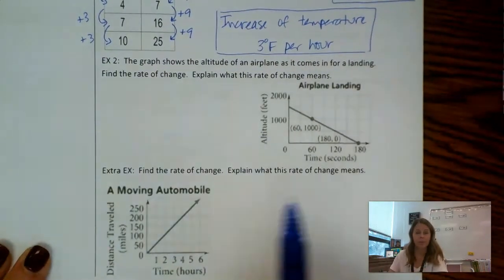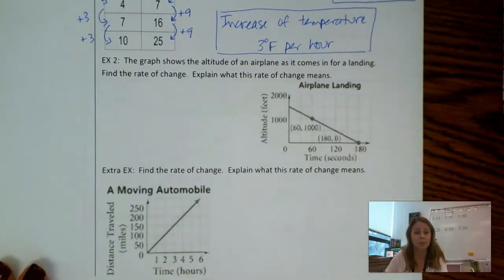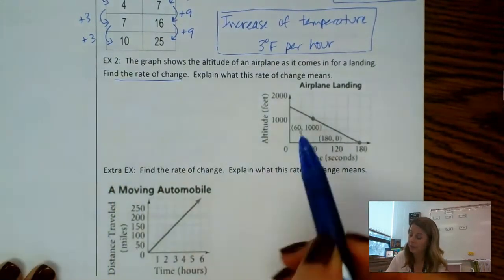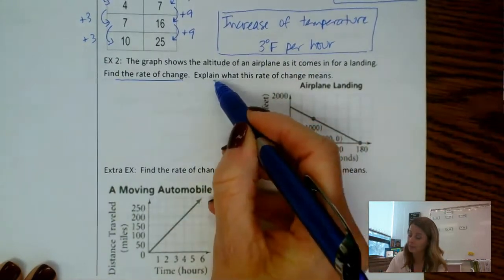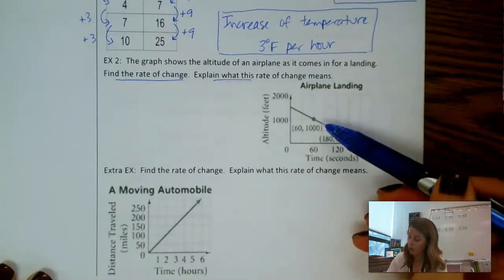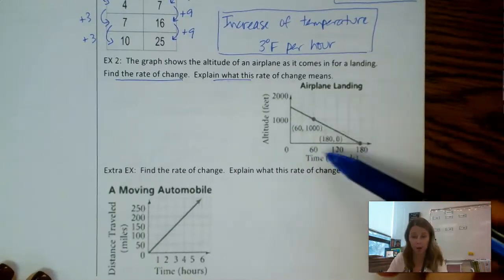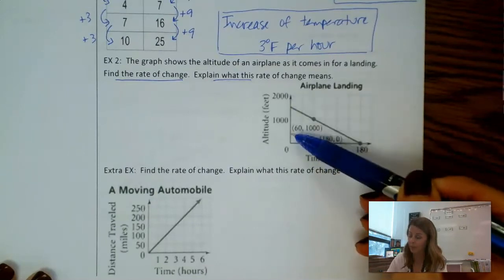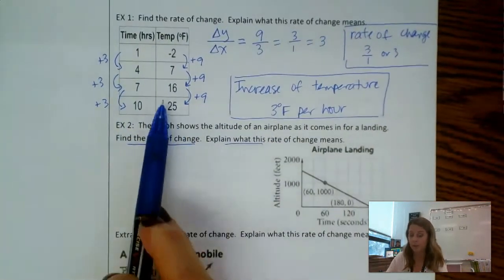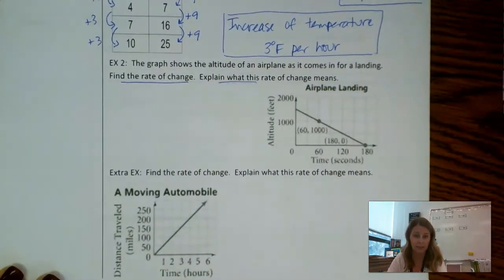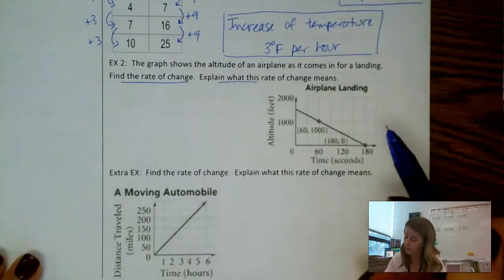Okay number two. The graph shows the altitude of an airplane as it comes in for a landing. Find the rate of change. Okay and then let's explain what this means. So rate of change. We could go off of the graph, but I can clearly see it's not increments of 1 here. We could also make a little table here. So let's do this approach for this one here. And then you can kind of decide on future examples what's easier for you.